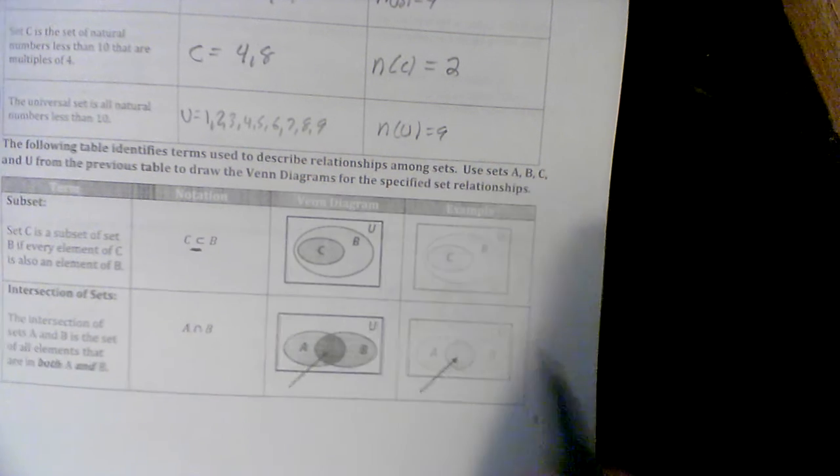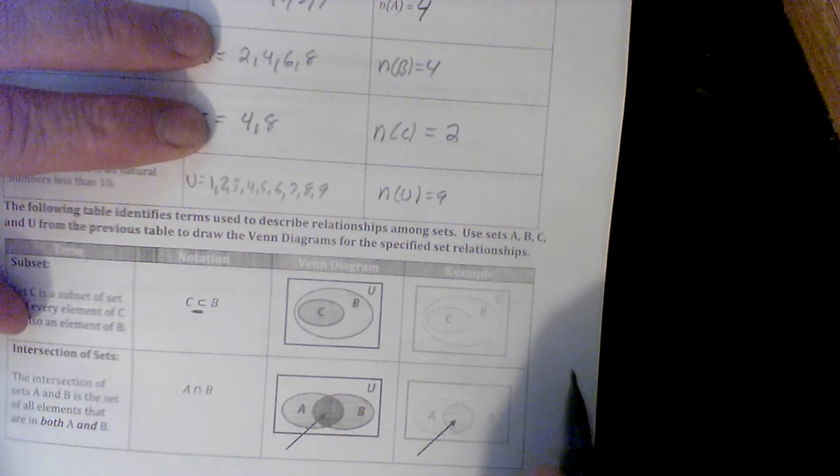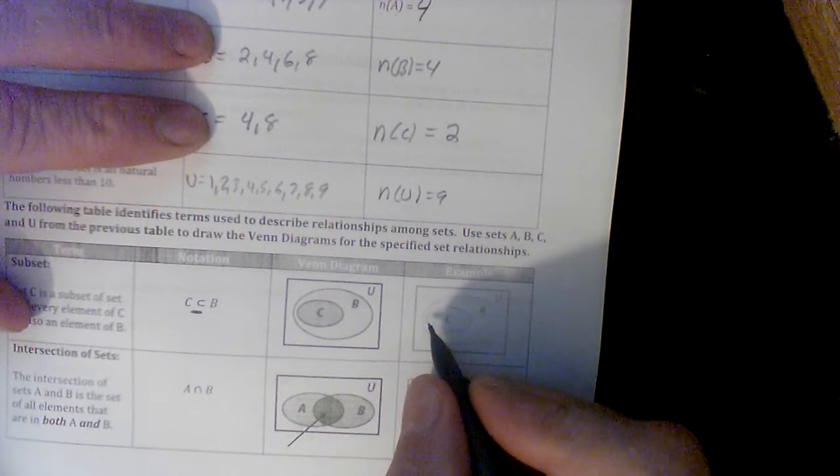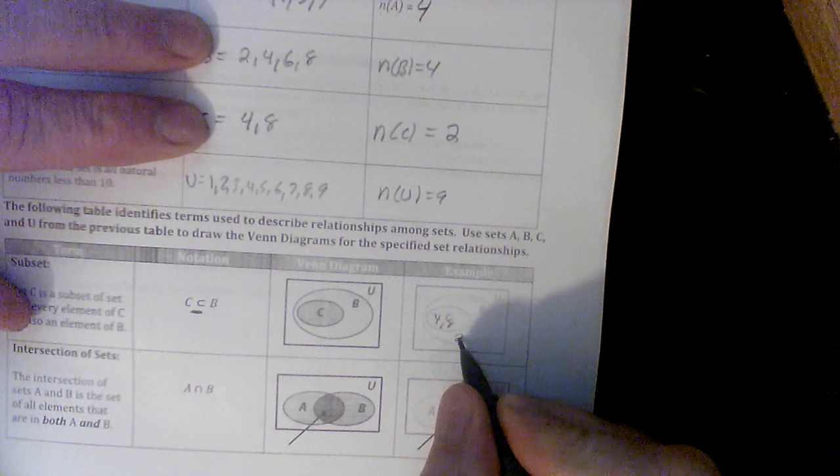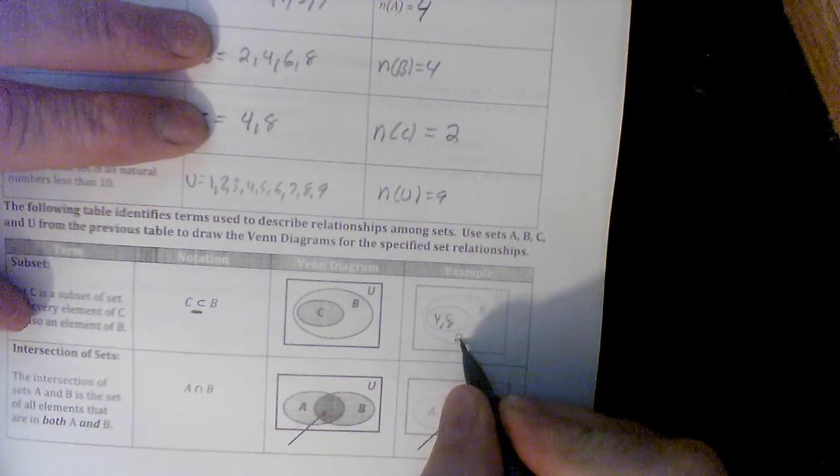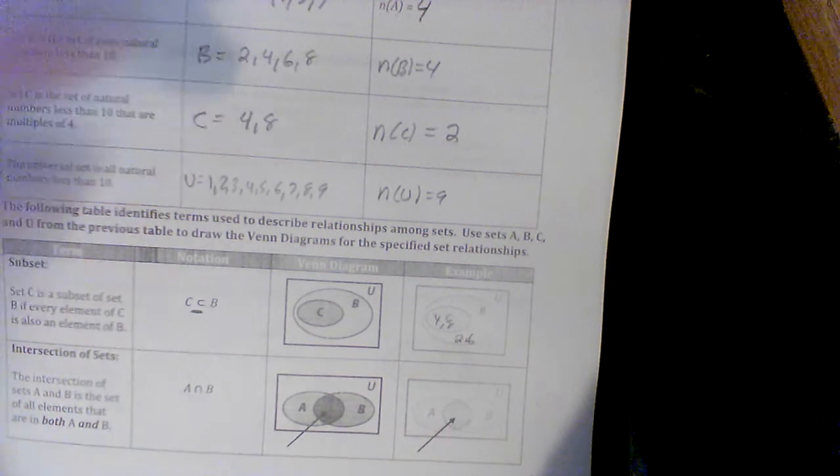So, does all of C fit in B? And it sure looks like it. B has 2, 4, 6, and 8. And set C is just 4 and 8. And B has 2 and 6 in it as well. And that's how we used our Venn diagram.